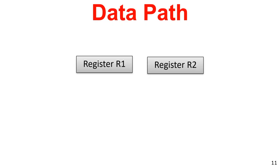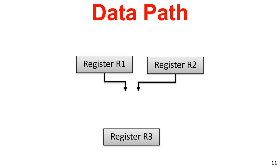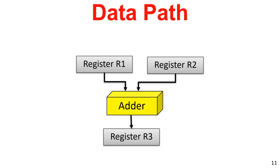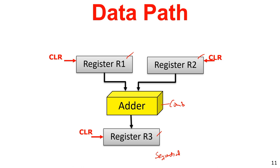Looking at the data path: there are 2 registers R1 and R2 based on the English-like statement, another register R3, and an adder which is a combinational element. R1, R2 and R3 are sequential elements requiring a clock and load signals. All registers have a clear signal: whenever clear is on, R1, R2 and R3 are all initialized to 0.